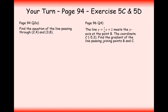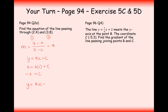Well done for having a go. Let's look at page 94, question 2a. We have two coordinates, so I'll label them coordinate 1 and coordinate 2. The gradient is 8 minus 4 divided by 3 minus 2, which equals 4. So the equation looks like y equals 4x plus c. Substituting in the easier coordinate (2, 4): 4 times 2 is 8, so 4 minus 8 gives minus 4 equals c. The final answer is y equals 4x minus 4.